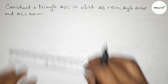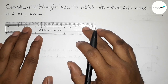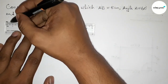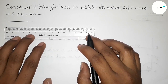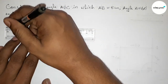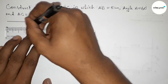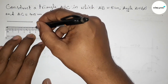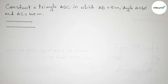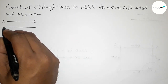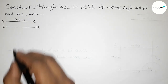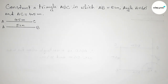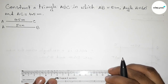First of all, let us note the given two sides. AC equals 4.5 centimeter and AB equals 5 centimeter. So this is the AC line and this is the AB line segment — AC equals 4.5 centimeter and AB equals 5 centimeter.